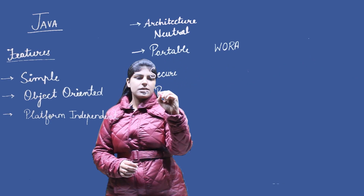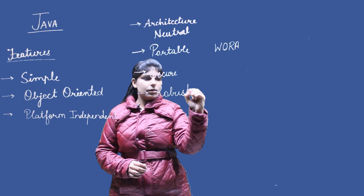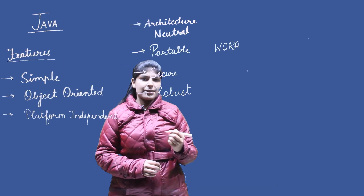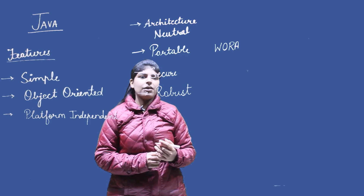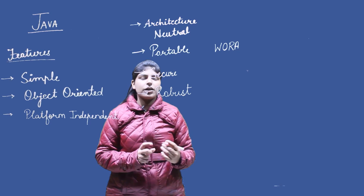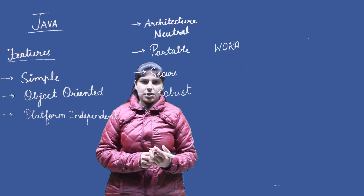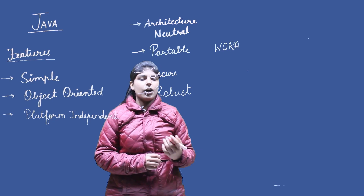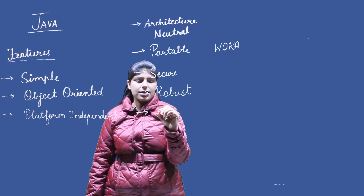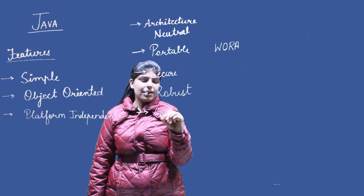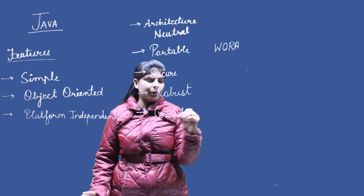The next feature is robust, which means Java can handle error-prone situations. Java has a feature for garbage collection, and we can handle exceptions in Java, which makes it a robust programming language. Java is also both a compiled and interpreted language.